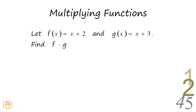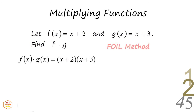Let's try an exercise on multiplying functions. For function f of x equals x plus 2, and g of x equals x plus 3, find f times g. In this case, we will use the FOIL method.